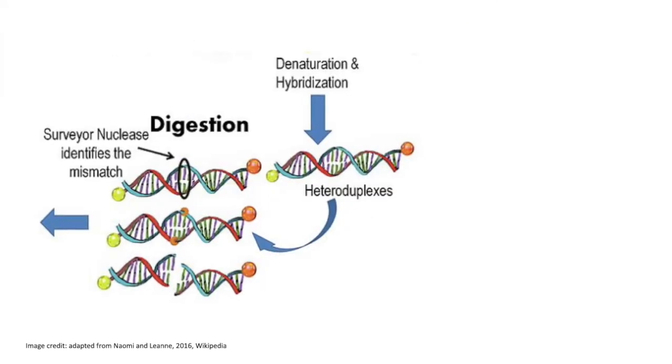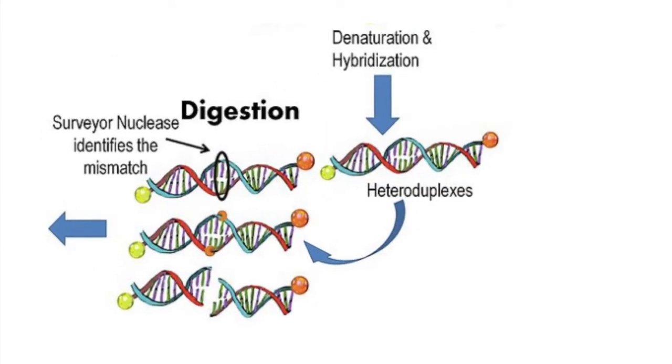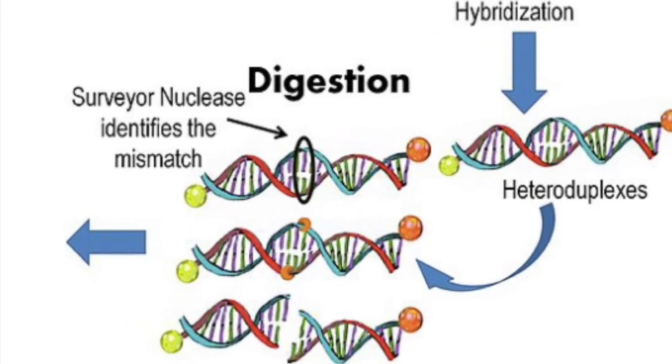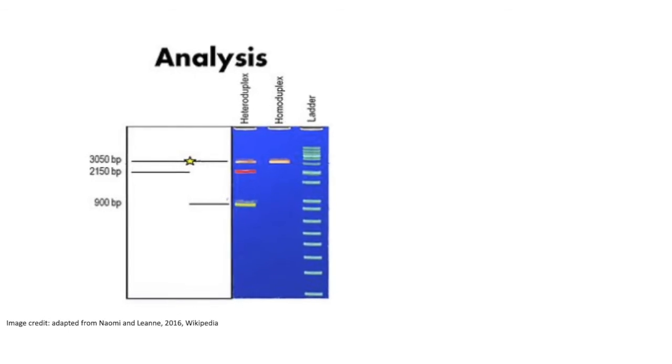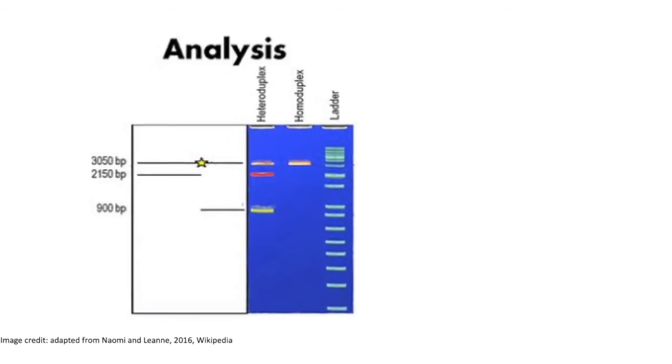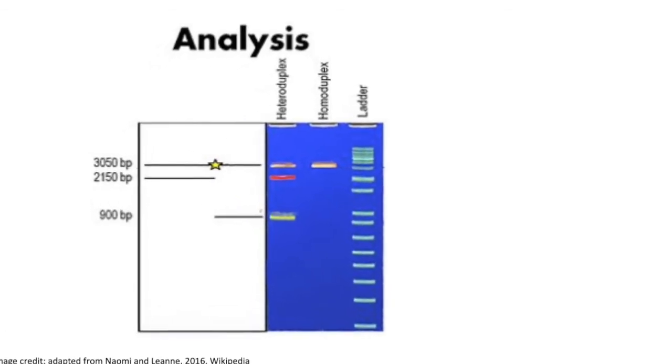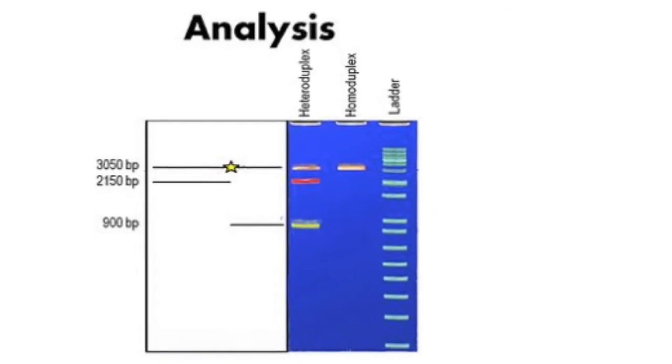The specialized nucleases, surveyor or T7E1, will cleave only such strands that are a mismatch. So when you run this on an agarose gel, you will see multiple bands where editing took place, and this will flag to you that editing has occurred.